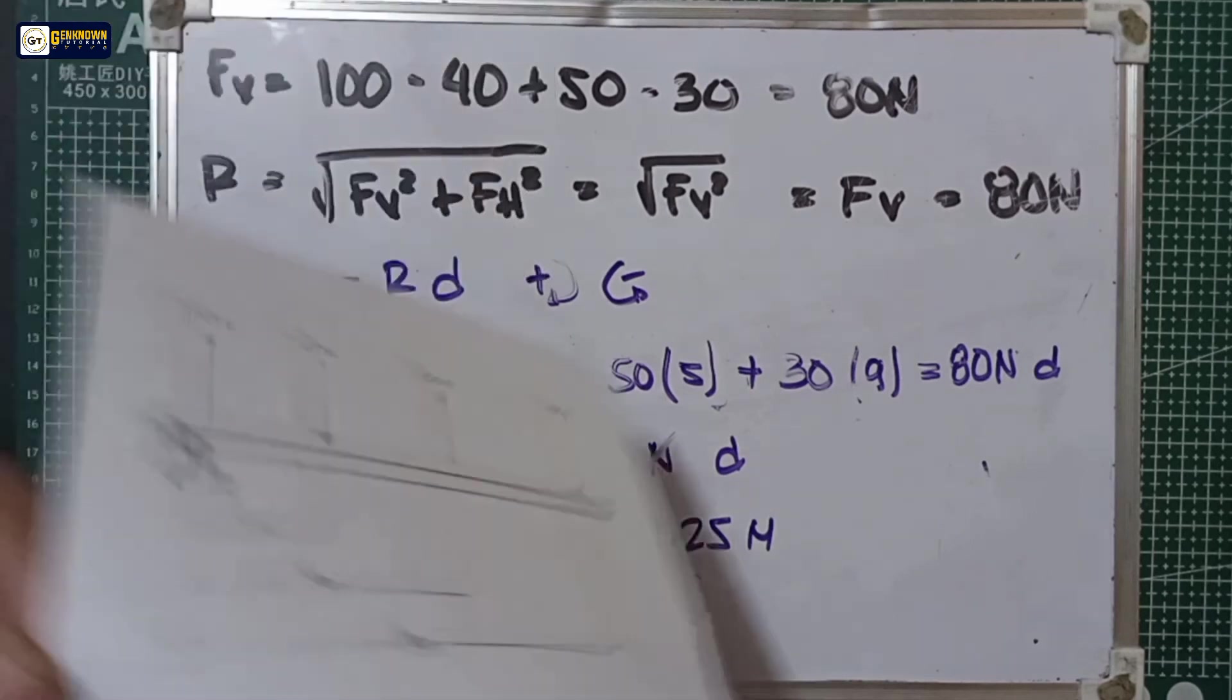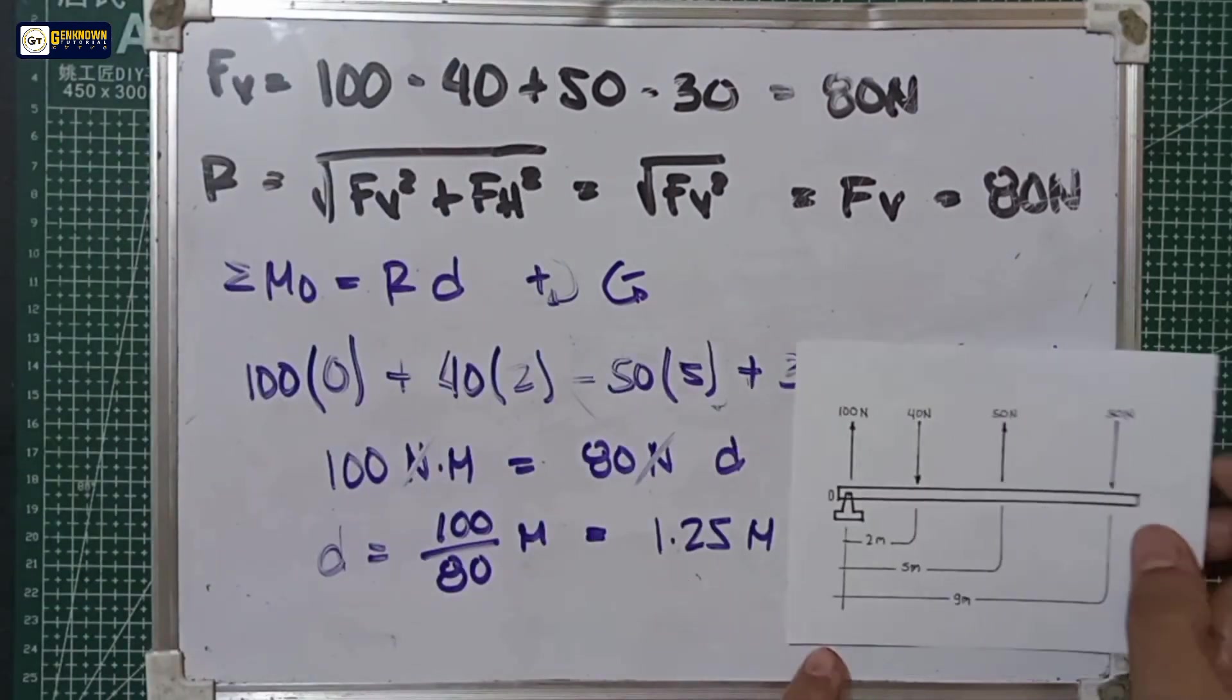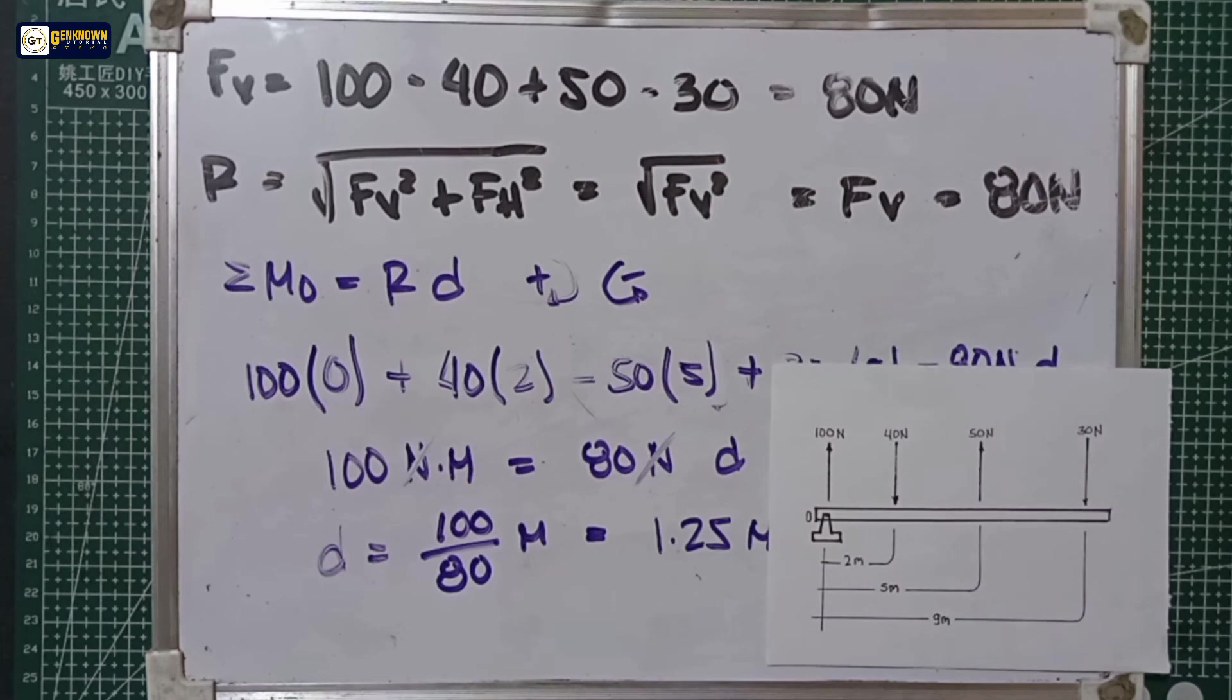So in position, the location of our resultant is 1.25 meters. It starts from the moment or our origin, so 1.25 up to here, maybe. Not accurate, but that's the idea.